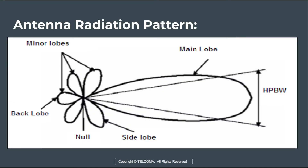This diagram shows the antenna radiation pattern. It shows the graphical representation of radiation properties of an antenna as a function of space coordinates. In most cases, the radiation pattern is determined in the far field region and it is represented as a function of directional coordinates.